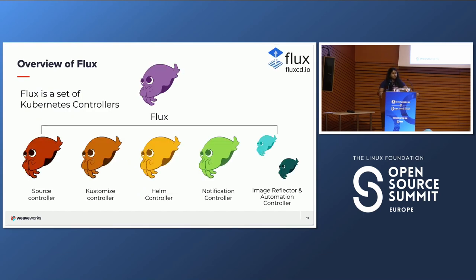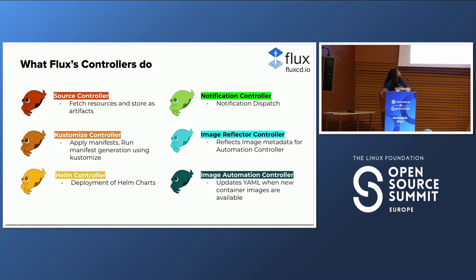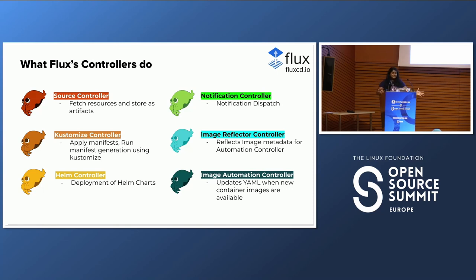Flux is a set of Kubernetes controllers — if you're not familiar, controllers basically control the lifecycle of objects, creating, destroying, and updating things. The source controller fetches resources and stores them as artifacts — it's the one pulling from whatever source, most commonly Git, and looking for new changes. The kustomize controller is the one that applies those manifests — it's called that because it uses Kustomize in the background. If you have a kustomization.yaml it applies whatever is there; if you don't, it creates one itself and recursively searches the folder for any YAMLs and applies all of them.